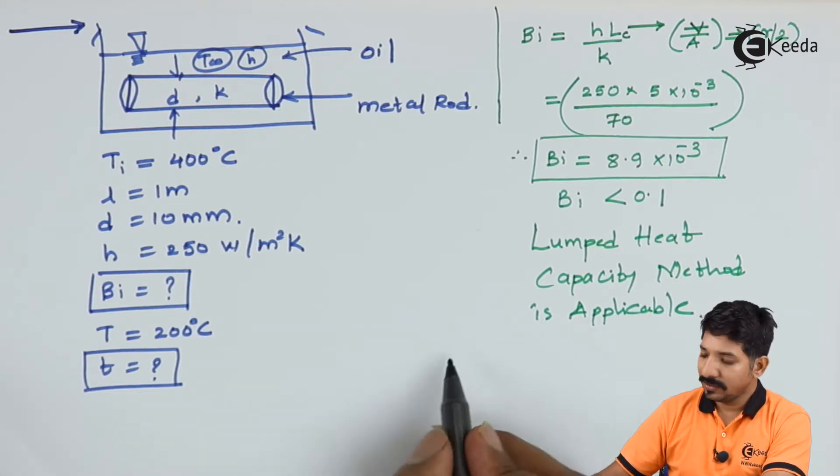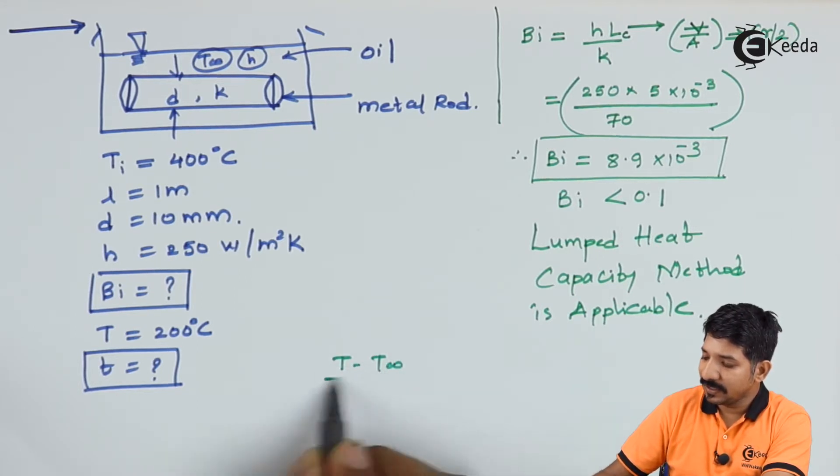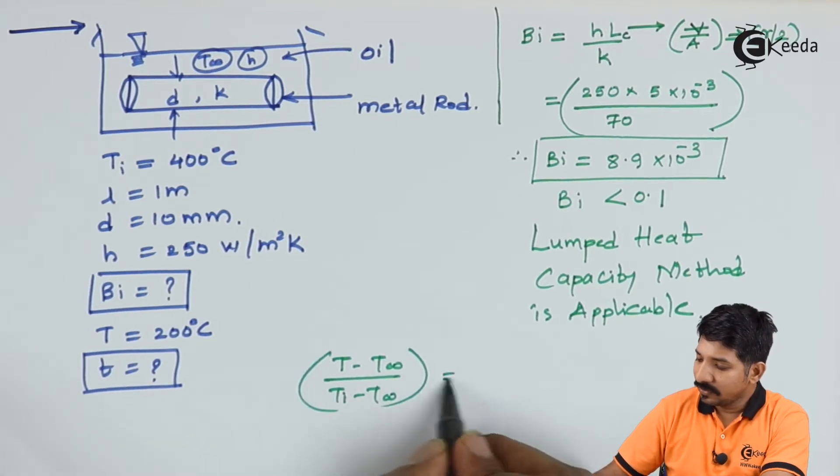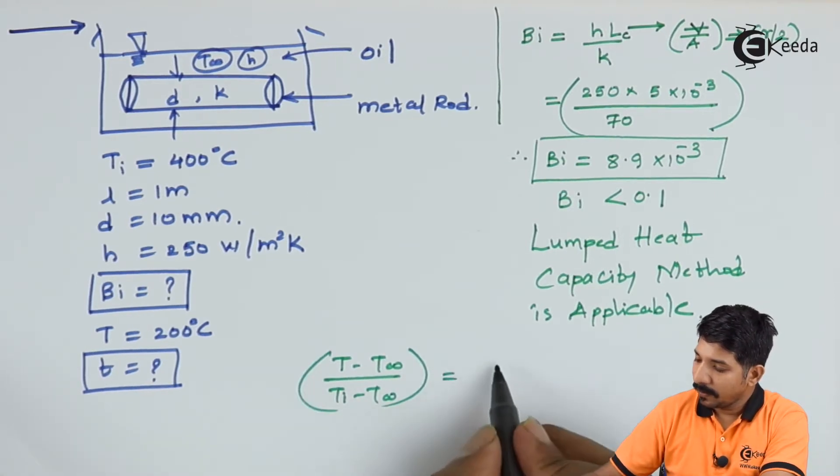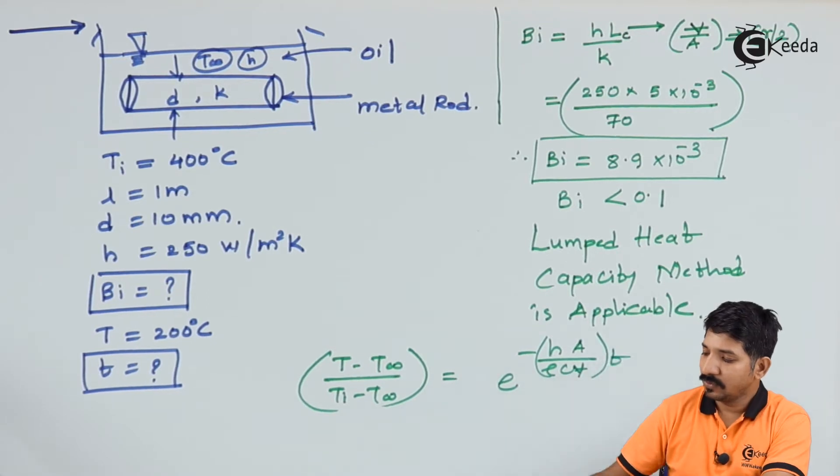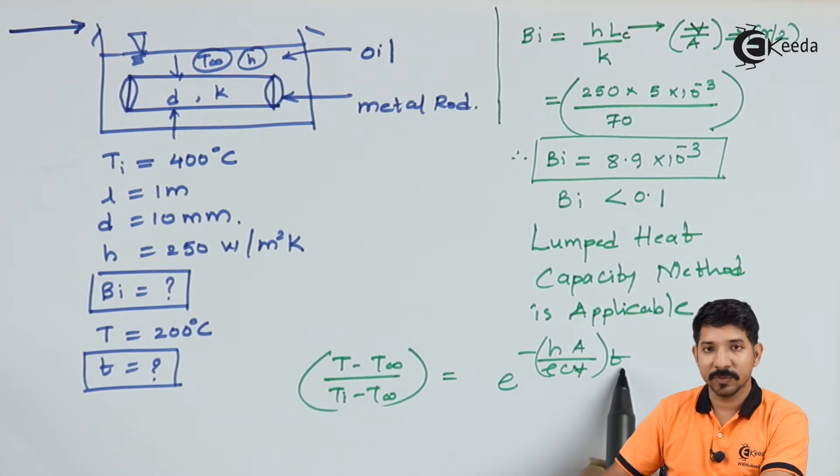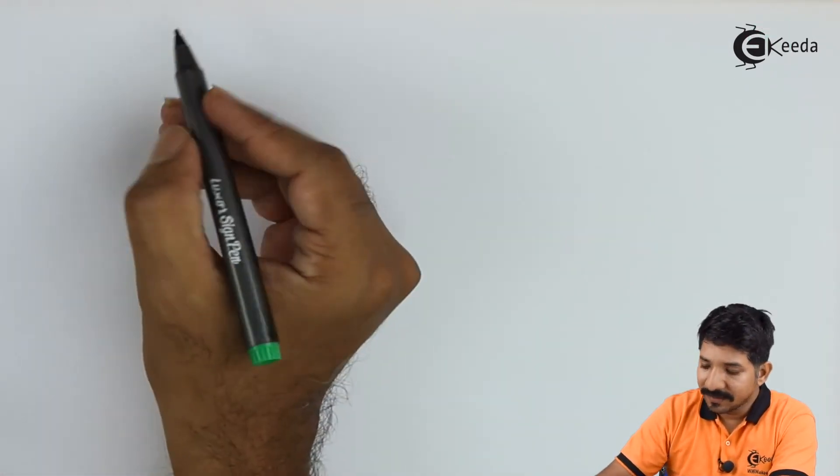As we have found that the lumped capacity method is applicable, we can straight away use the formula: T minus T infinity upon TI minus T infinity equals e raised to minus HA upon rho CV into T. Now if I substitute all the numbers, I shall easily get the time.